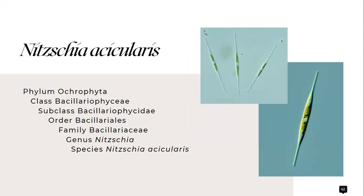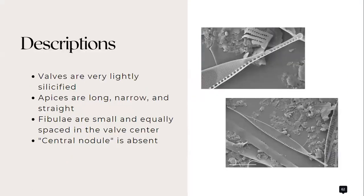We also have Nitzschia acicularis which belongs to the family Bacillariaceae. Its valves are very lightly silicified. Its apices are long, narrow, and straight. The fibulae are small and equally spaced in the valve center. The central nodule is absent.